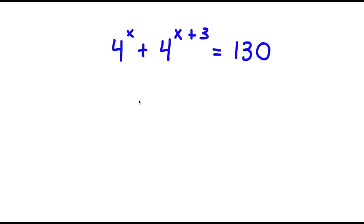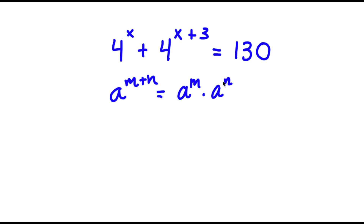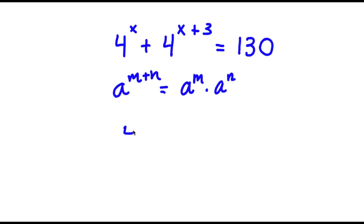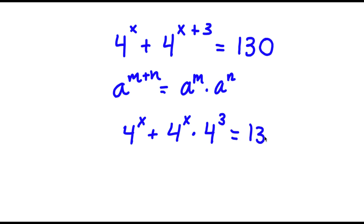In this problem, I have 4 to the power of x plus 4 to the power of x plus 3 is equal to 130. To start, if I have something in the form a to the power of m plus n, this equals a to the power of m times a to the power of n. So 4 to the power of x plus 3 equals 4 to the power of x times 4 to the power of 3.